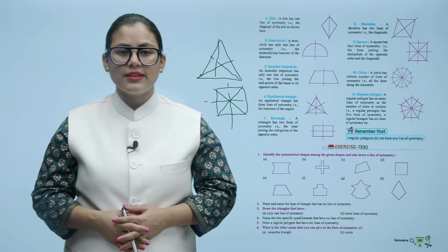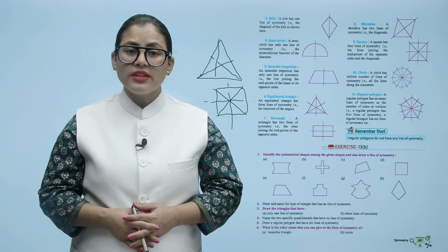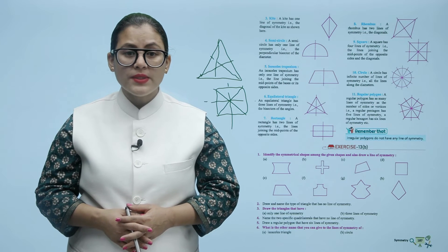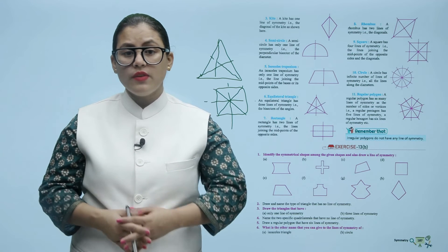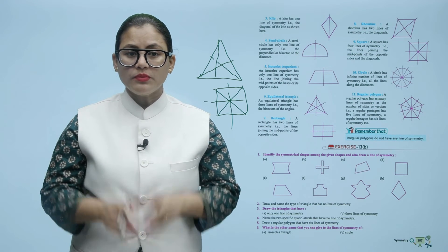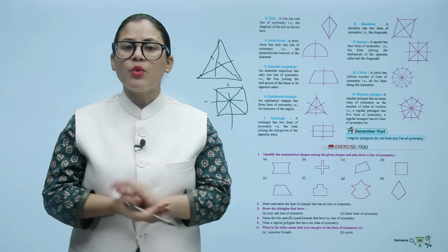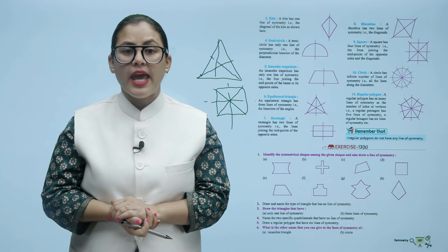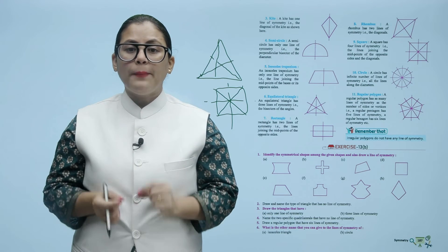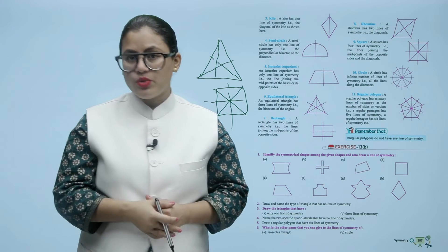Let's see the exercise: Identify the symmetrical shapes among the given shapes and also draw a line of symmetry. You have to identify the shape and draw its line of symmetry.